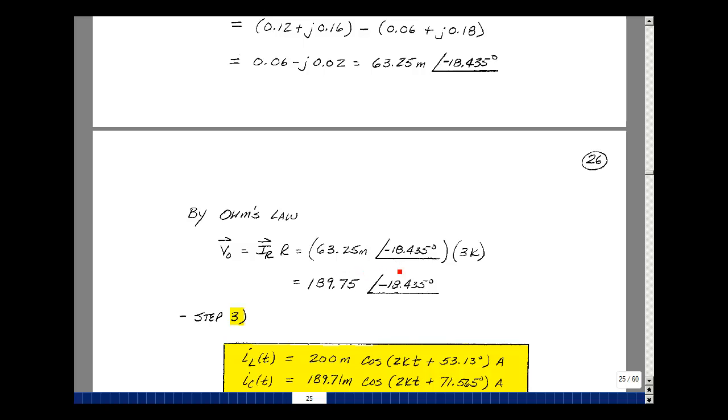or 3K at angle 0. So I'm just going to multiply this magnitude times this. The 0 angle won't change this. I get 189.75, an angle of minus 18.435.